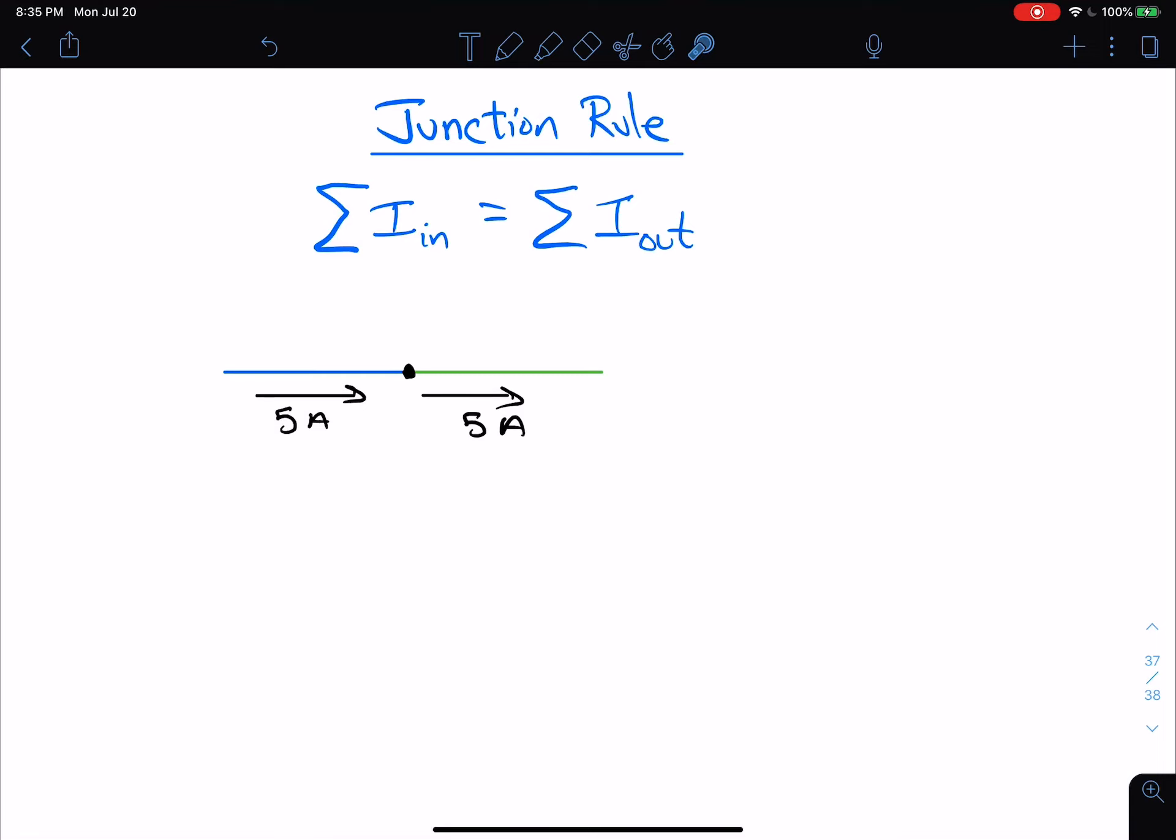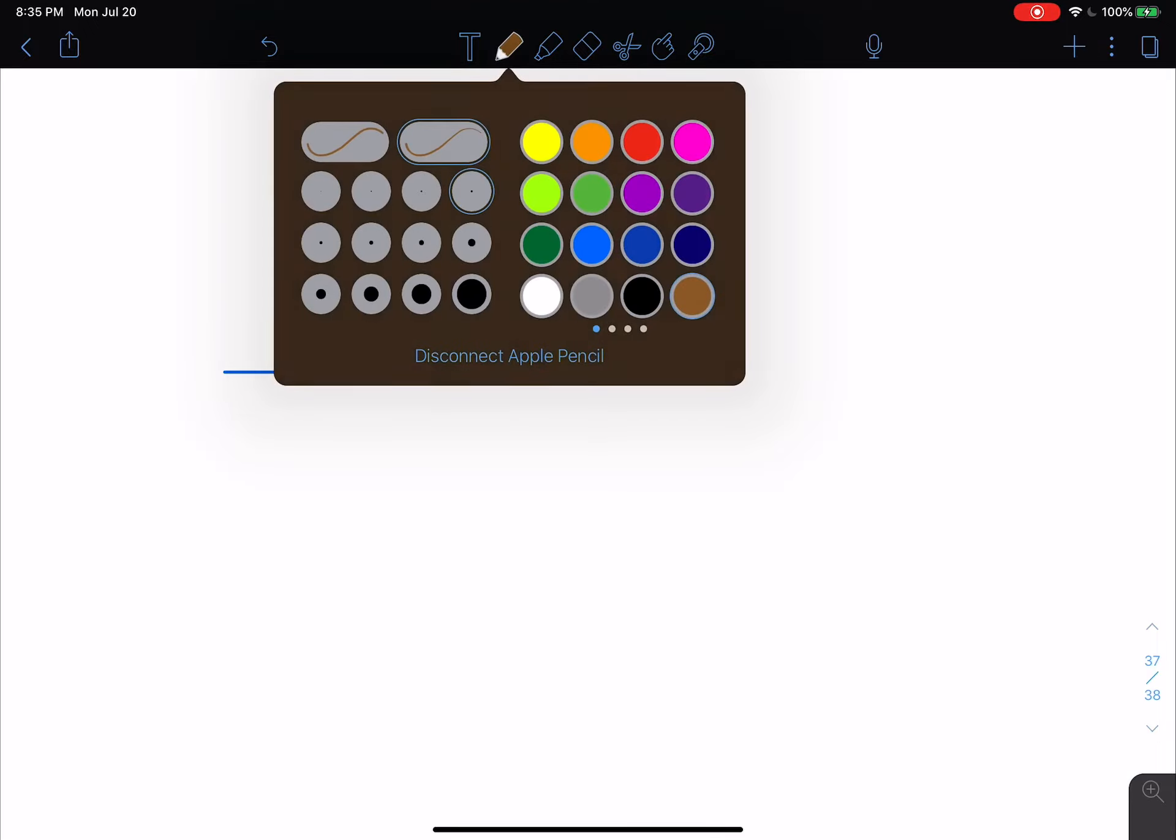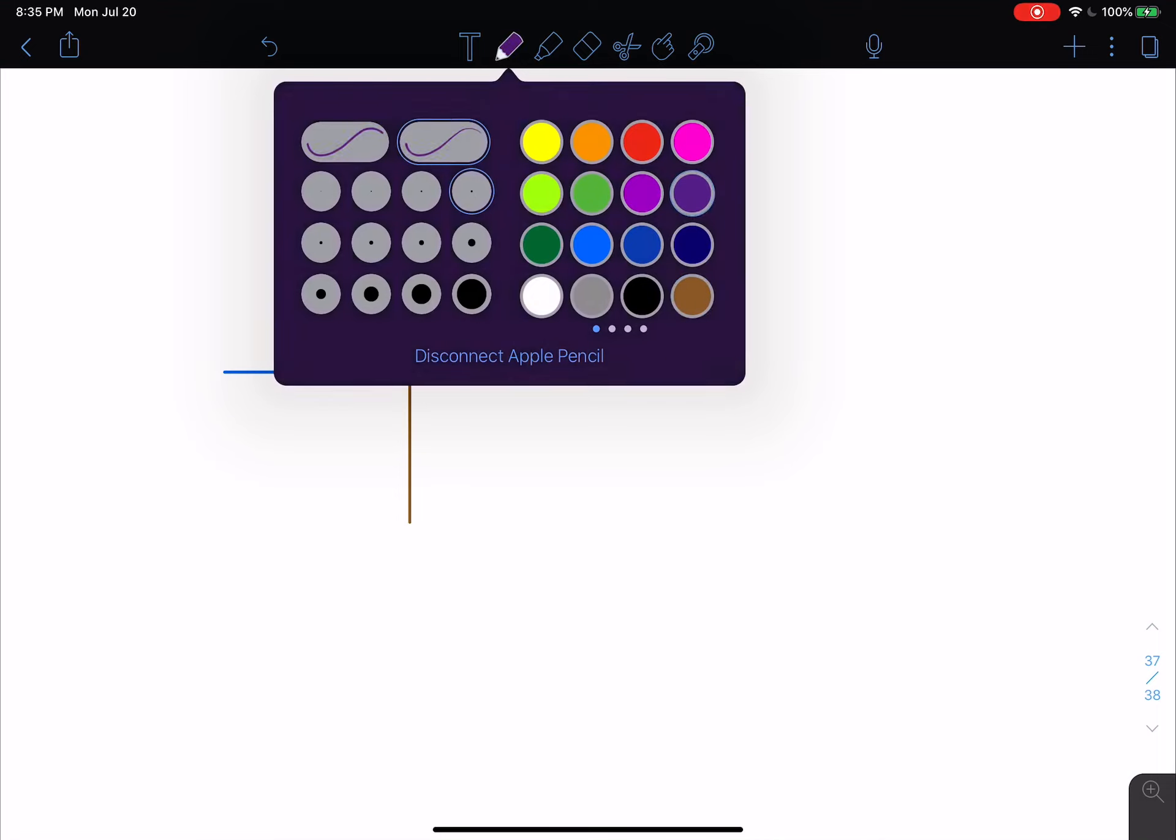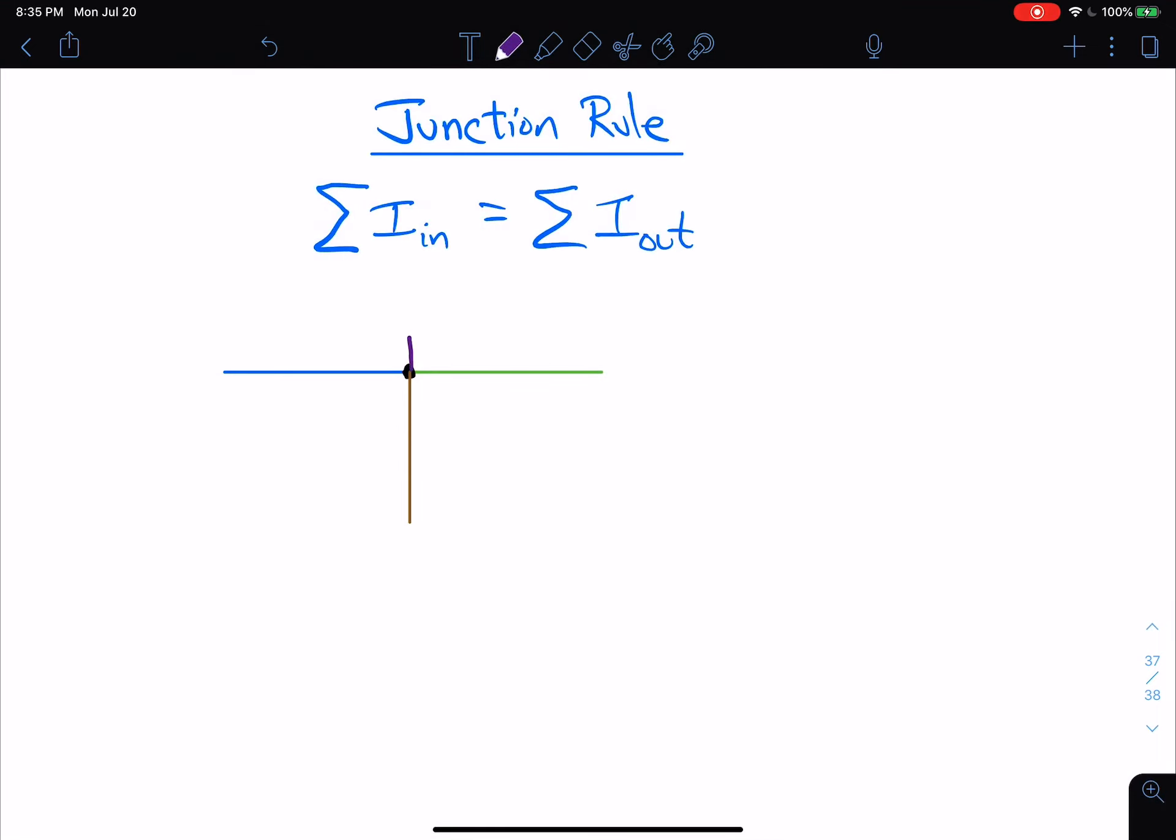Now, more interesting things happen when you have more than just two wires. So for example, let's stick with this. Let me erase all this here. And we'll throw in a third wire right here. So now I have three wires coming into this junction. And what the heck, why don't we just go ahead and throw in a fourth wire? Here's a fourth wire. So now I've got four wires all coming together at this point, which is, of course, the junction.